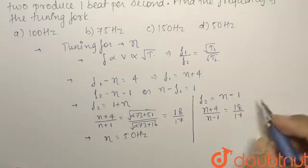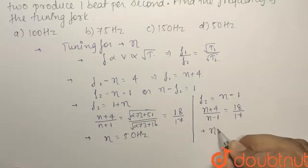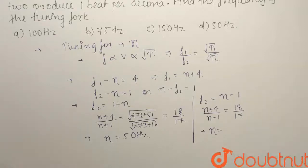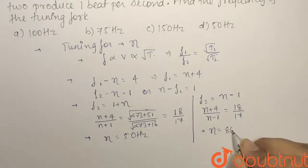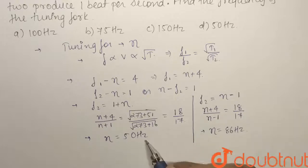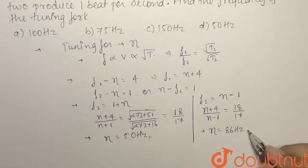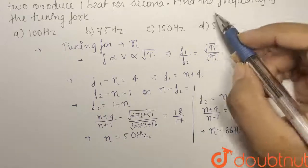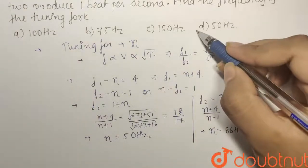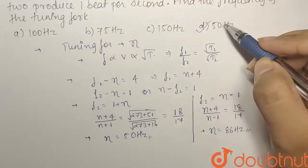18 by 17. Solving from here eta comes out as 86 Hertz. There can be two possible values, either 50 Hertz or 86 Hertz. Have a look at the options. Only one option, that is 50 Hertz, has been given in the question.